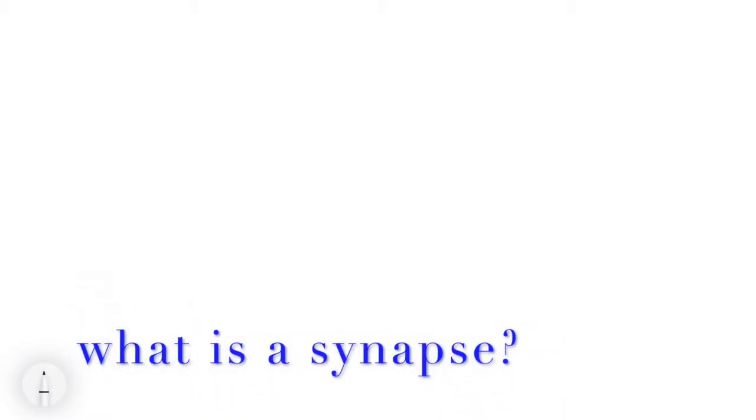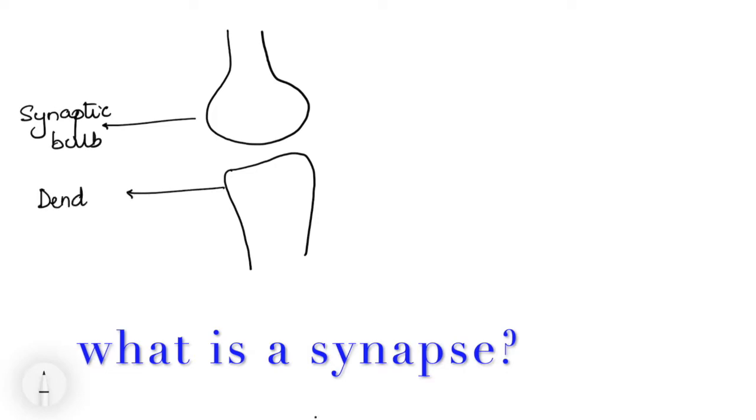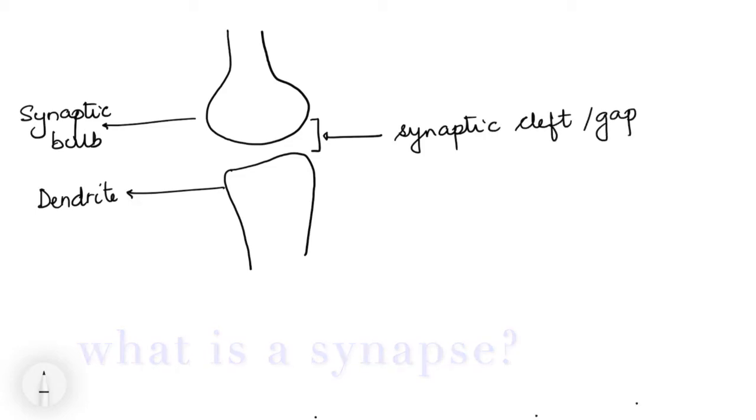In the previous video I have explained the conduction of nerve impulse along the axon. After conduction, the impulse is transmitted to the next neuron through junctions. So here you can see the pre-synaptic neuron, that is the synaptic bulb, and the post-synaptic one with the dendrite. There may or may not be a gap between them, and this entire thing with the pre-synaptic membrane and the post-synaptic membrane is called a synapse.